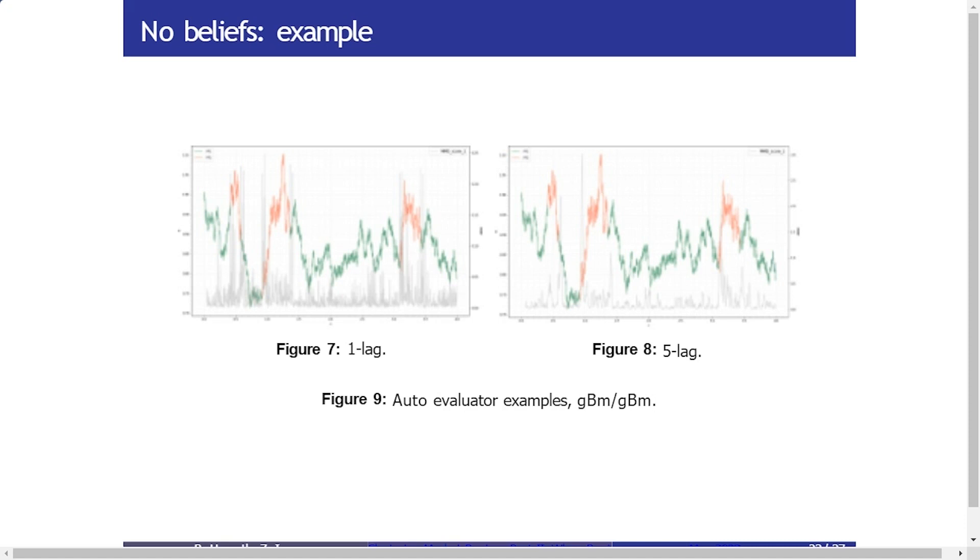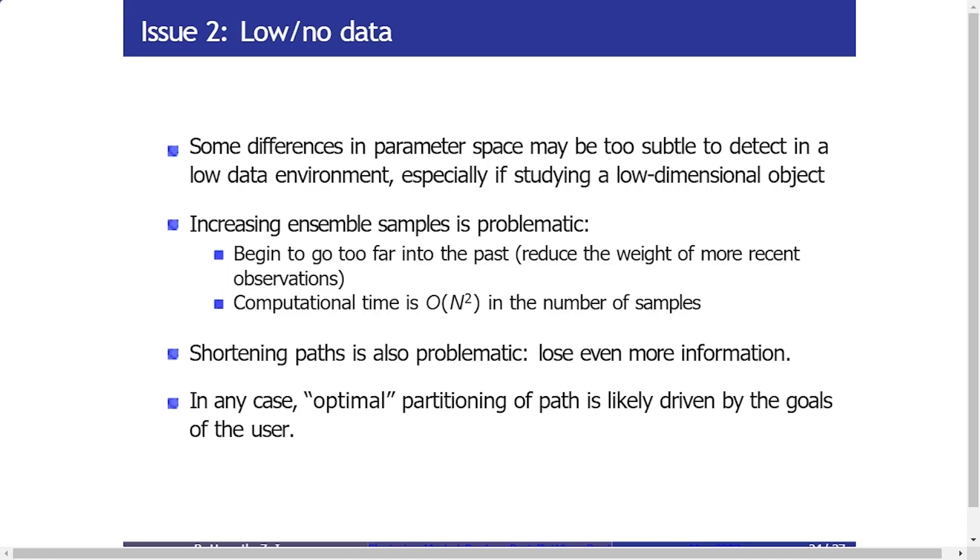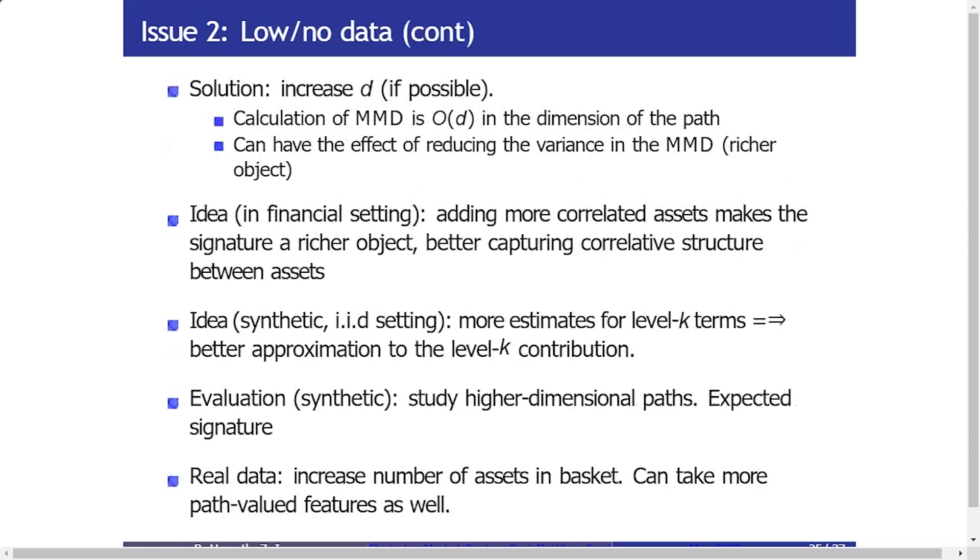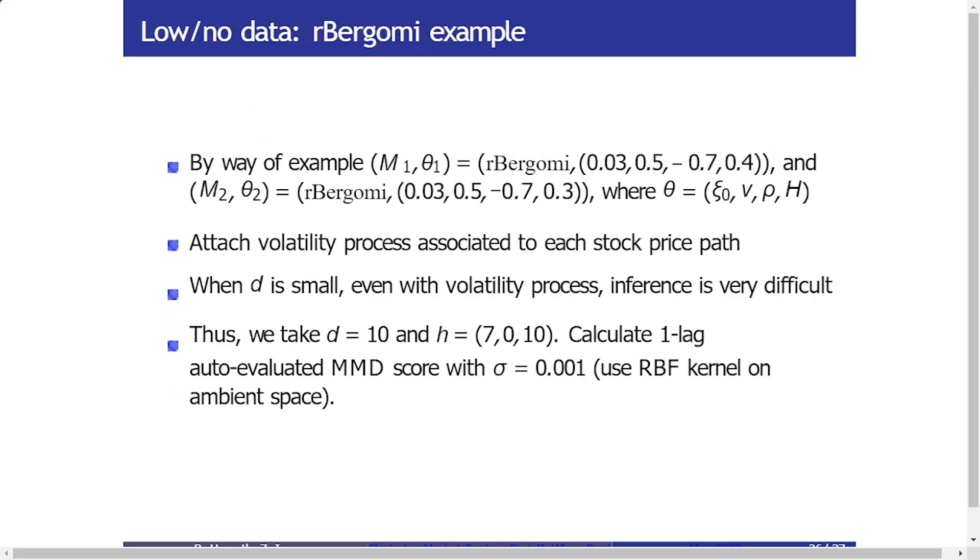Another issue is to do with having low amounts of data. So for example, let's say you don't have a lot of observations and it can be difficult to partition your paths into enough to have enough of a collection. One of the ways that we have found that seems to fix things is by increasing the dimensionality of the paths that we are considering. Essentially the long and short of this is that it has the effect of increasing the power of the estimation between each of the terms in the signature. So you're receiving a richer representation of the object that you're looking to consider changes in regime between.